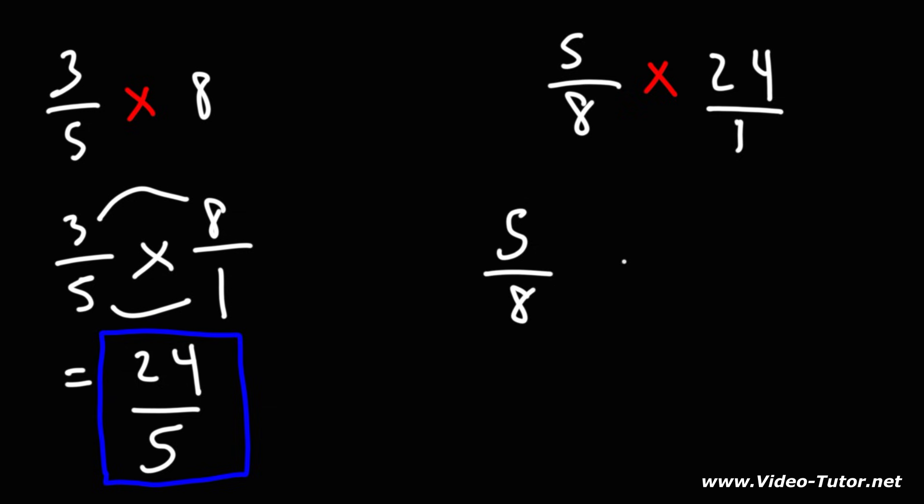So this is 5 over 8. 24, we could break that into 8 times 3. And notice that we could cancel the 8. So we're just going to be left with 5 times 3 over 1. And that's going to simplify to 15.